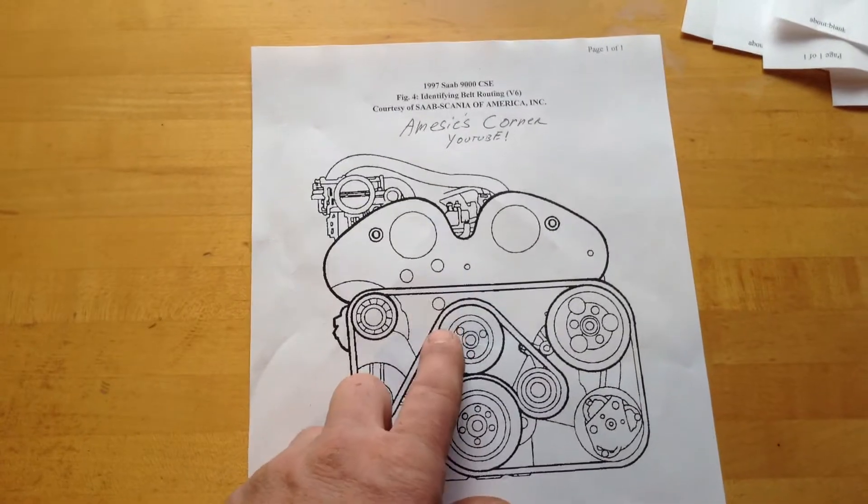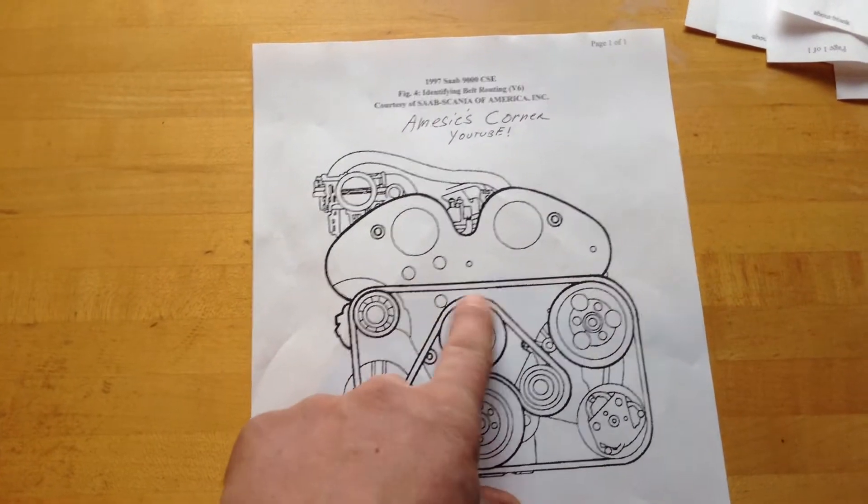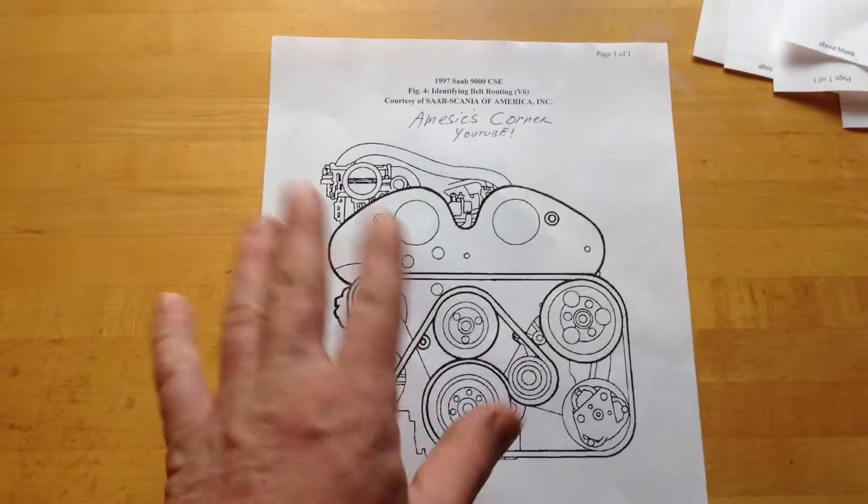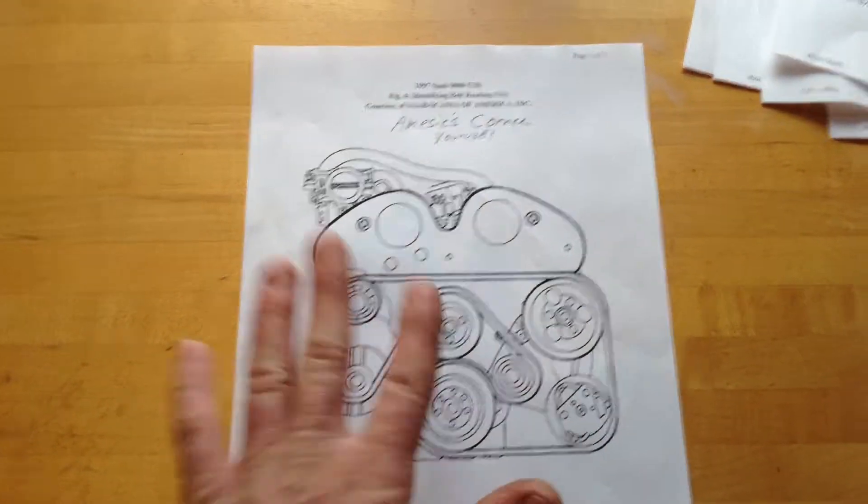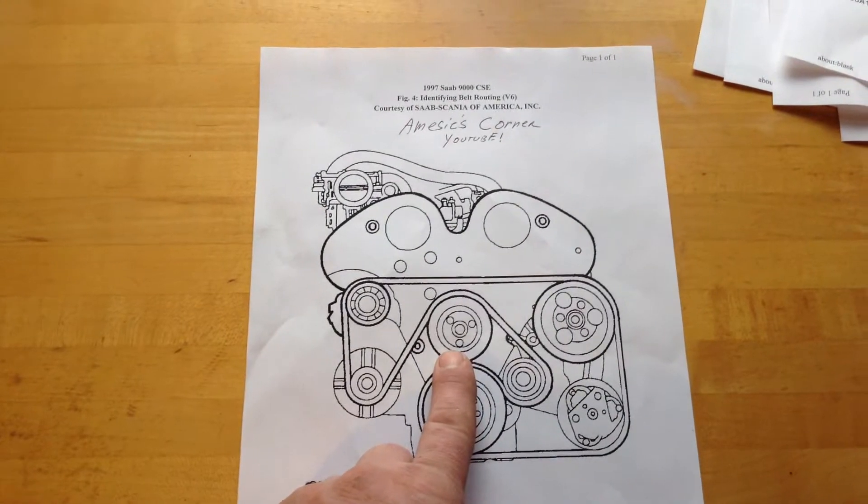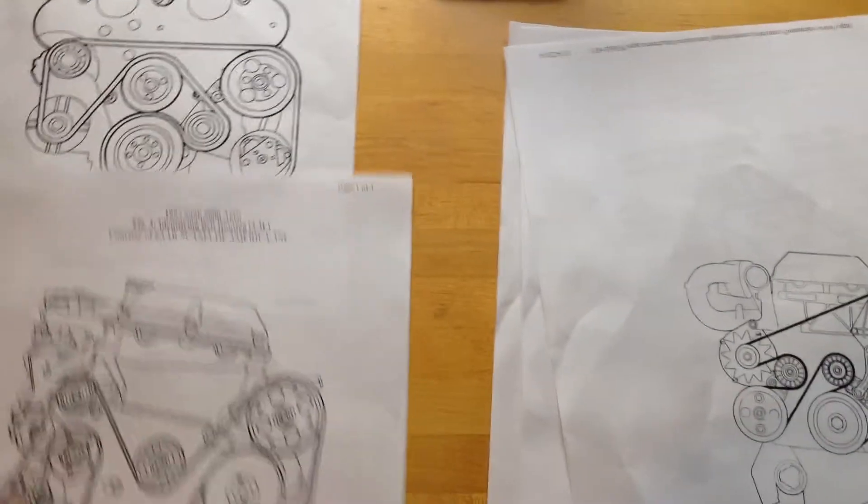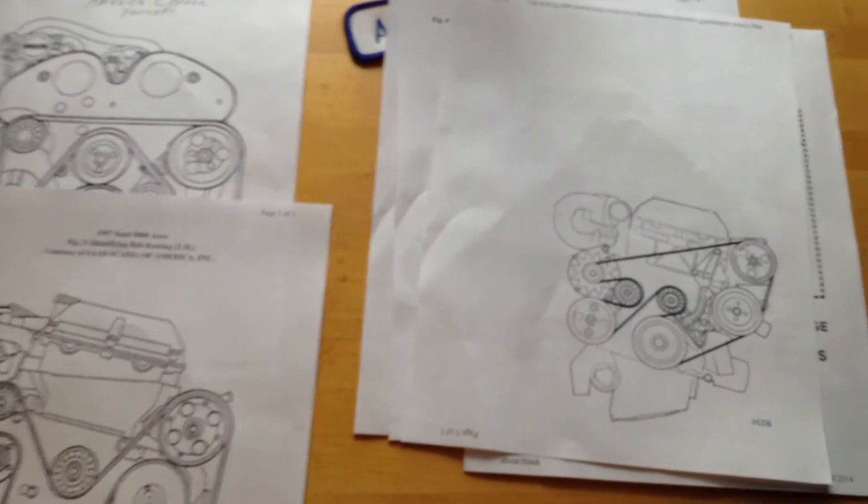Now these are really, really easy for me to get. I have all of these for not just Saabs, for just about any car. I've got these for belt routing, vacuum diagrams. I also have wiring diagrams. So if there's something here, something I can help you with that you need, I'm here for you guys. I'm here for my fans. I'm here for the fellow Saab enthusiasts.